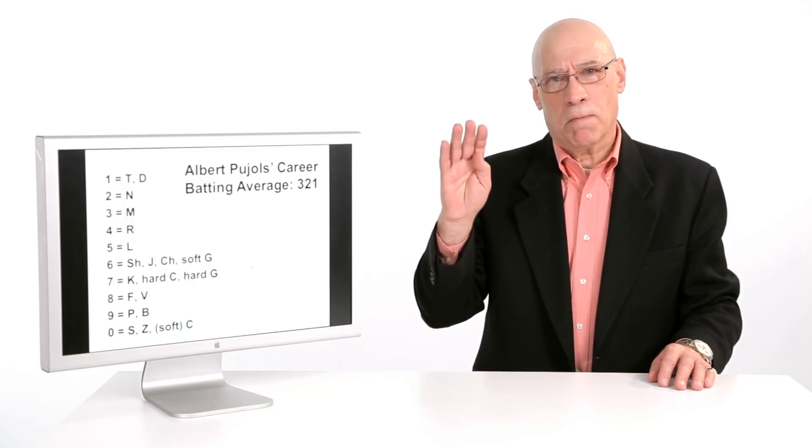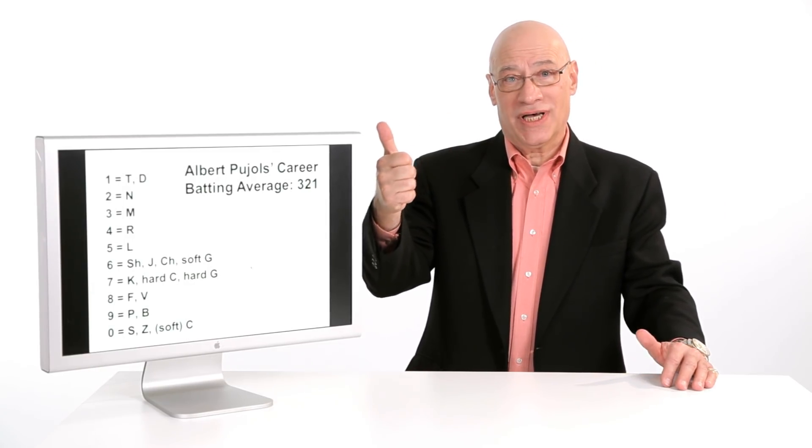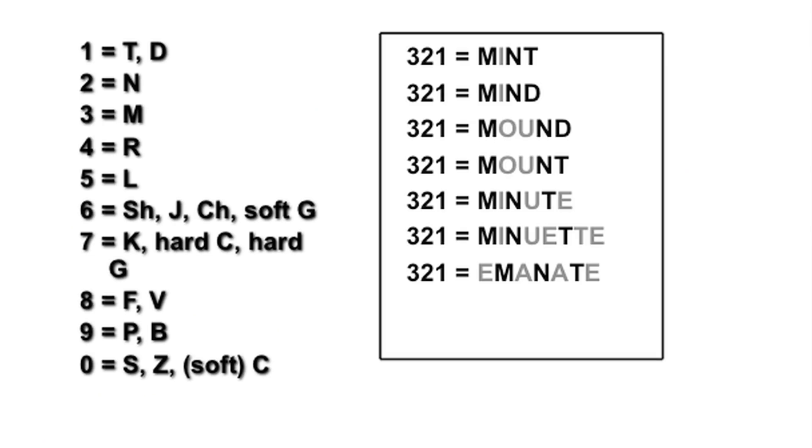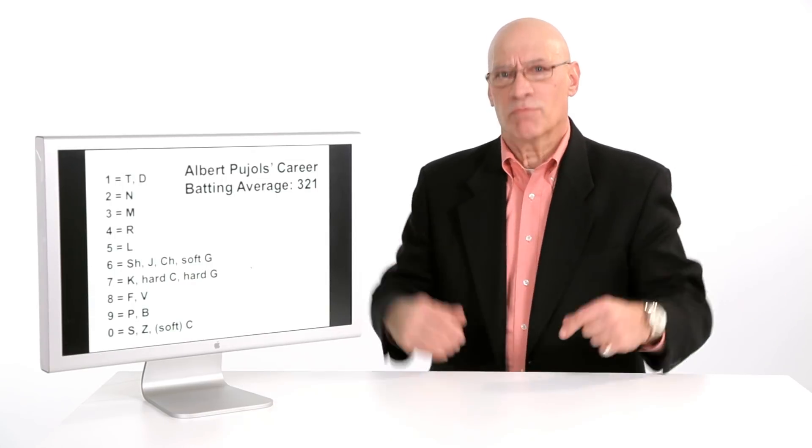Well, look at the chart. Three, mm, two, nn, one can be ta, mint. Mint can be 321. Now you'll notice 321 could also be minute, it could also be minuet, it could also be mound, or emanate, doesn't matter. On the way back to the number, all of those come back to 321.